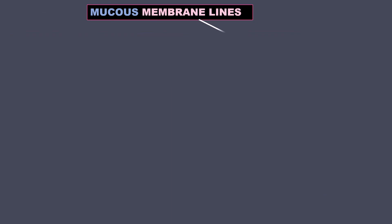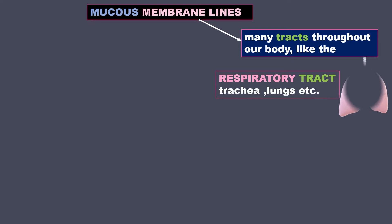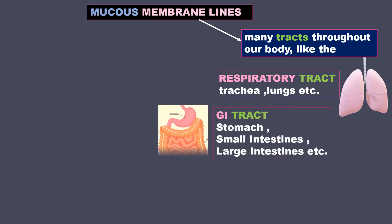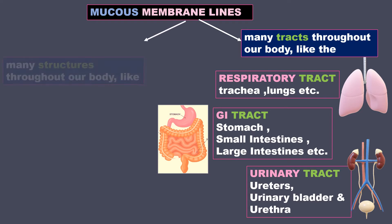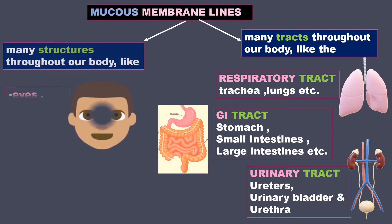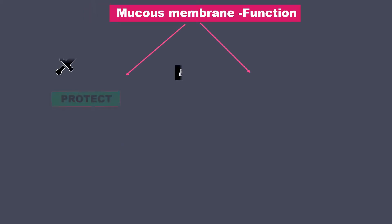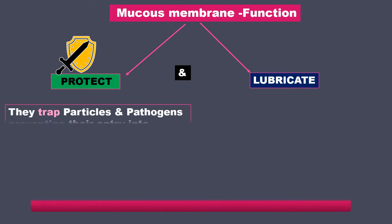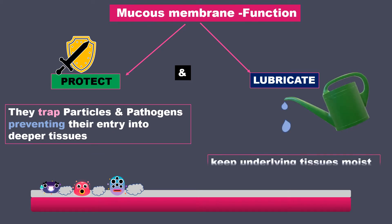Mucus membrane lines many tracts throughout our body, like the respiratory tract — trachea, lungs, etc. — the GI tract, which includes stomach, small intestines, large intestines, etc., and the urinary tract, including ureters, urinary bladder, and urethra. It also lines many structures like eyes, nose, and mouth. Mucus membranes function to protect and lubricate. They trap particles and pathogens, preventing their entry into deeper tissues, and they lubricate and keep the underlying tissues moist.